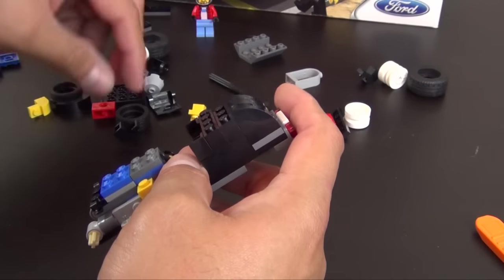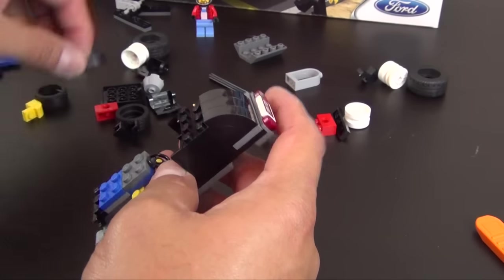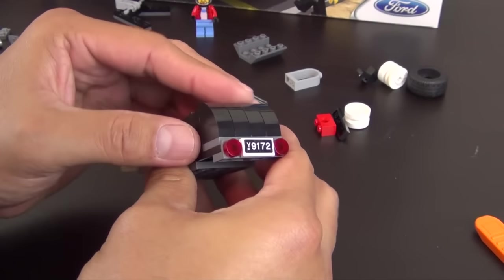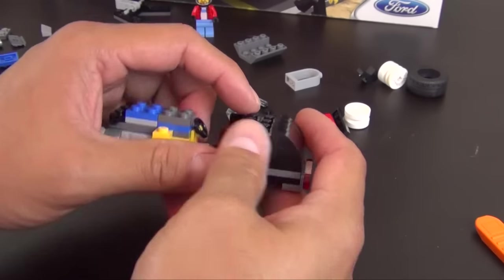Four of these sweeping curve pieces, it's going to create the trunk area for the Model A.